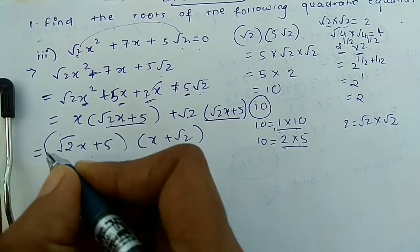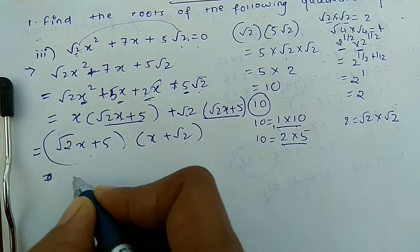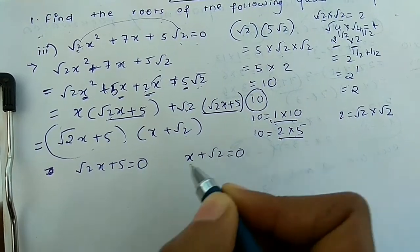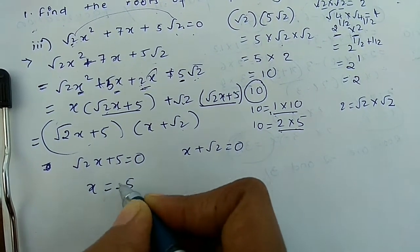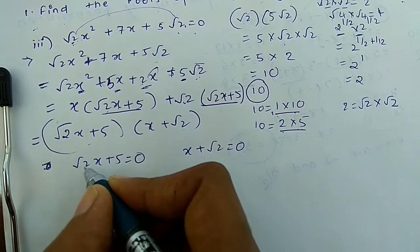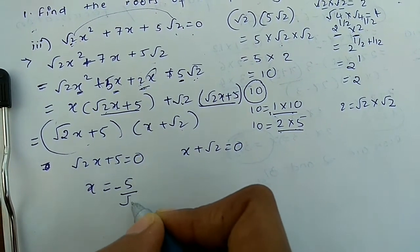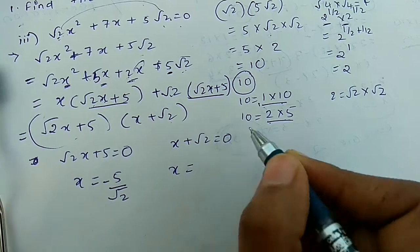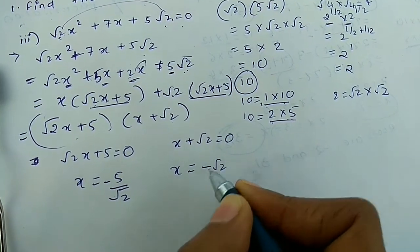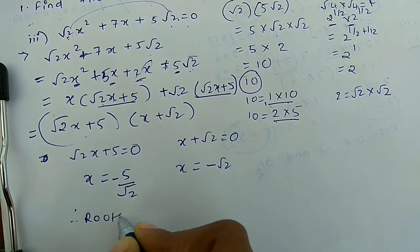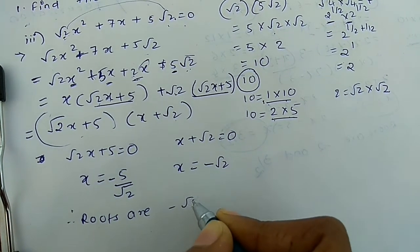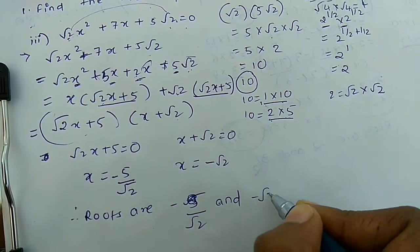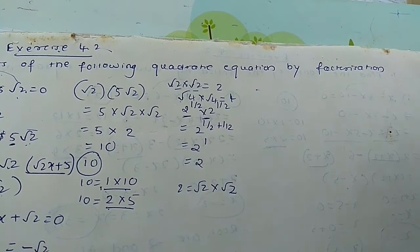So (√2x + 5) is common, giving factors (√2x + 5)(x + √2). To find roots: equate √2x + 5 = 0, so x = −5/√2; and equate x + √2 = 0, so x = −√2. Therefore the roots are −5/√2 and −√2. Now we will see the fourth example.